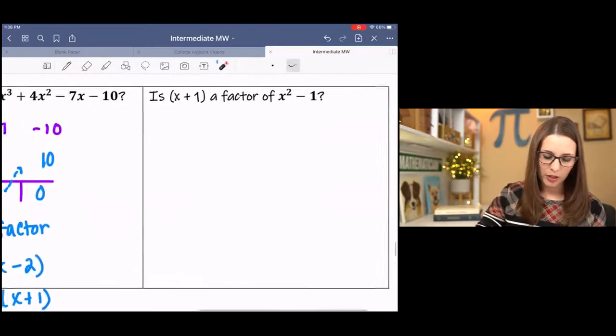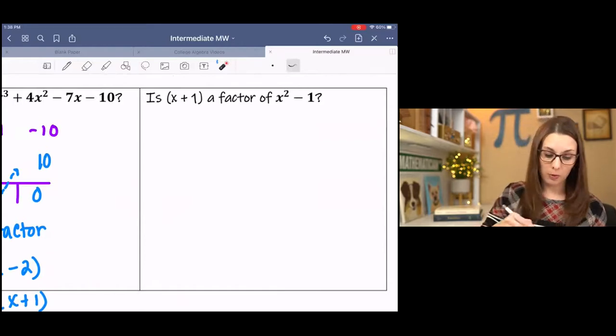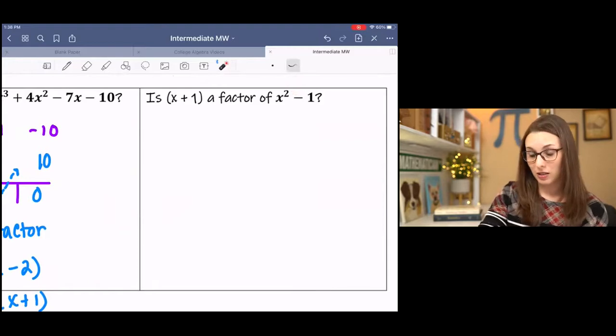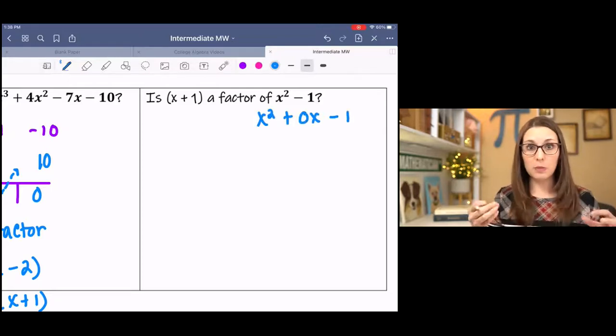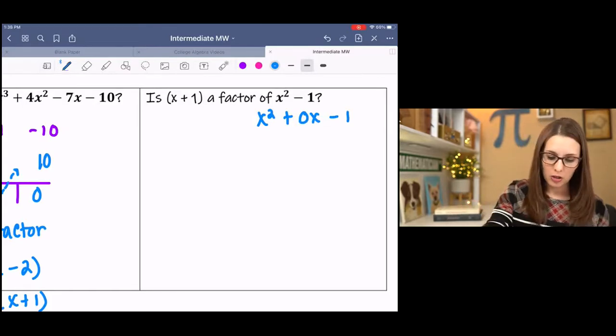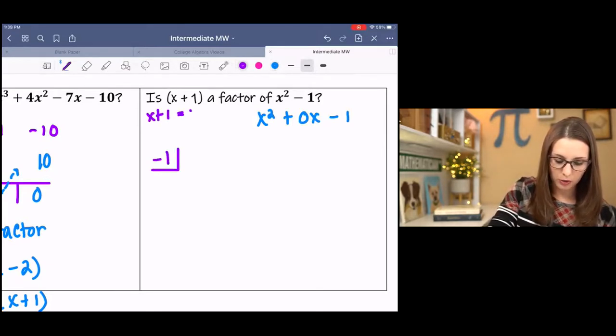Last example here. Is x plus 1 a factor of x squared minus 1? Now this is the one that I was about to talk about in the previous example. It skips x. So we're going to have to write a placeholder for that skipped piece.